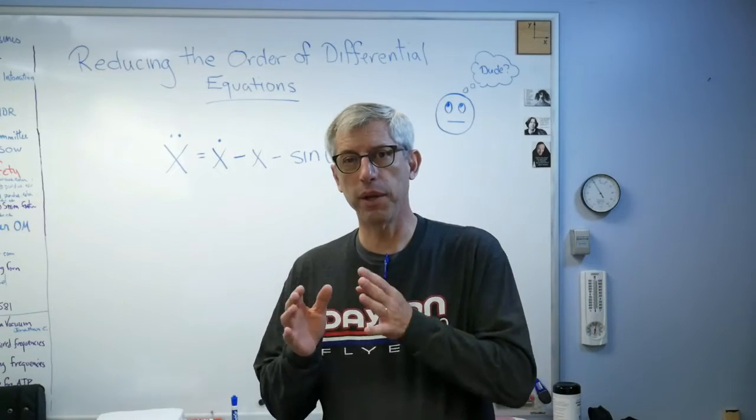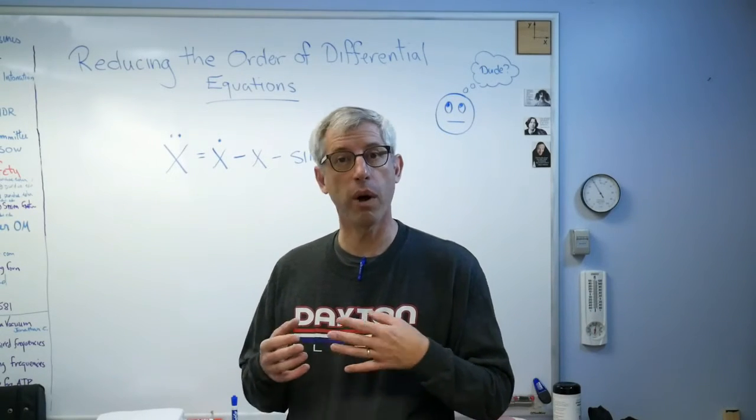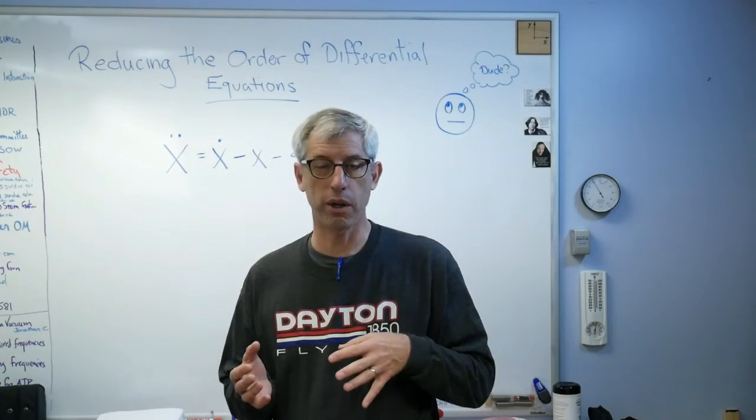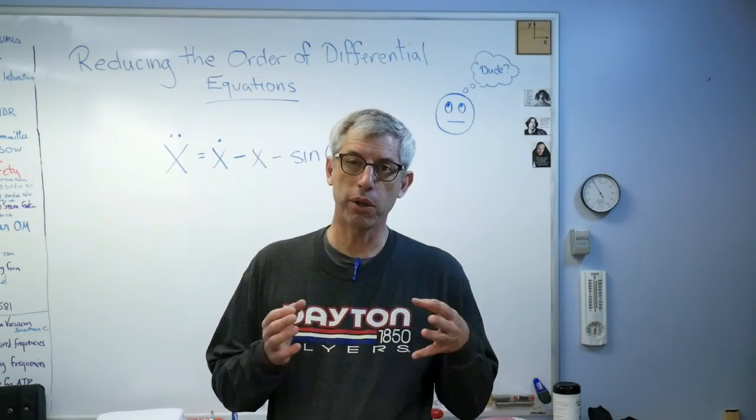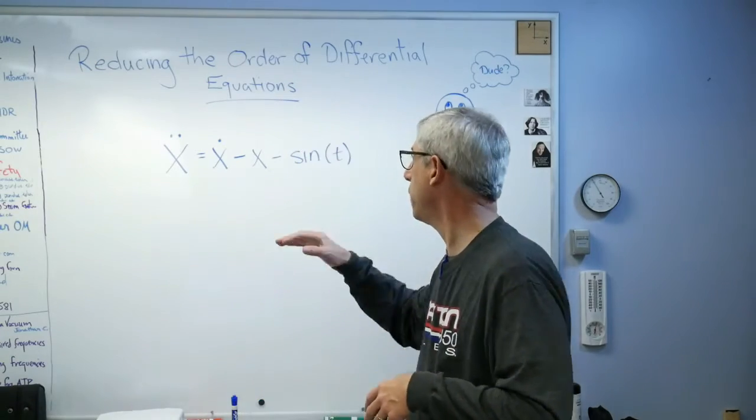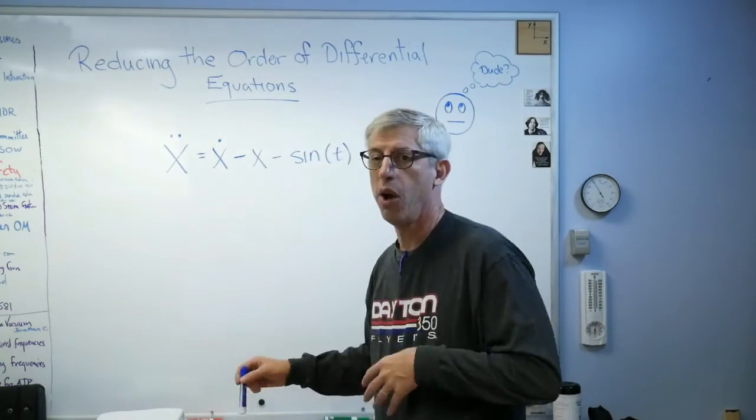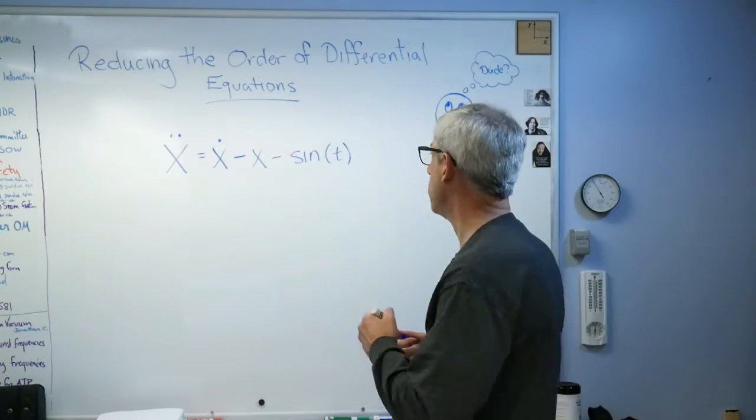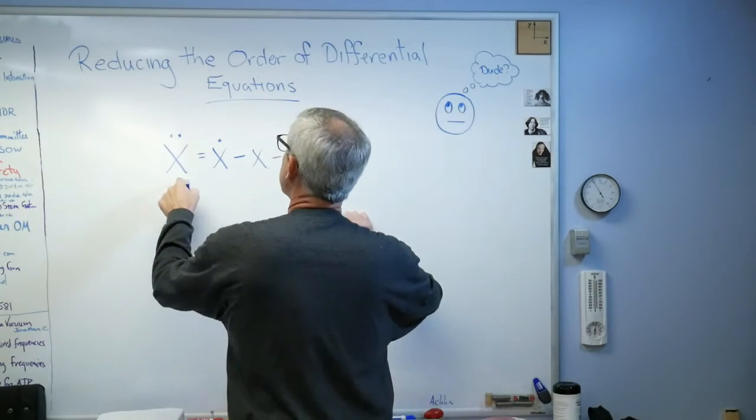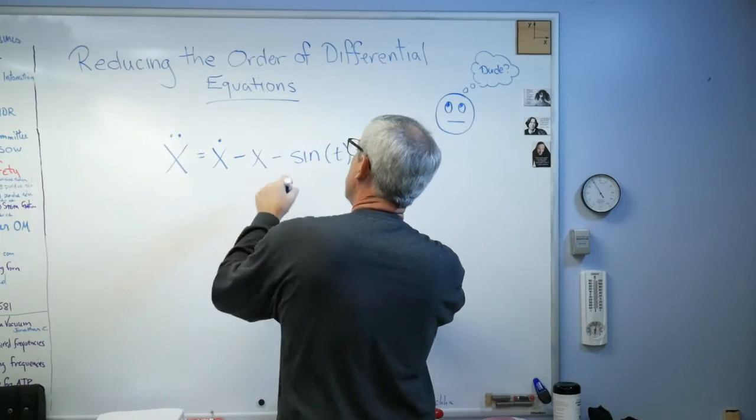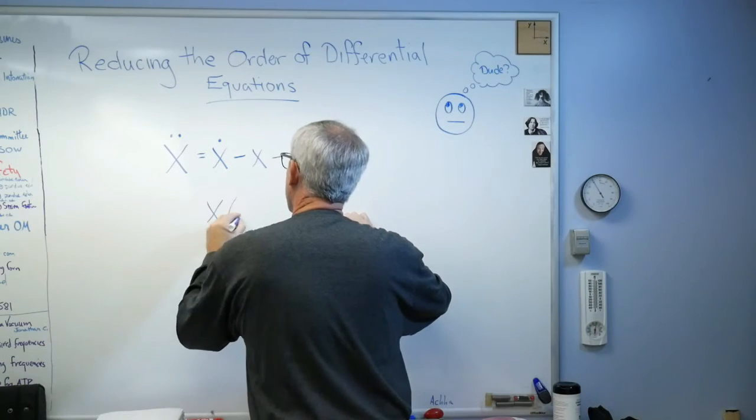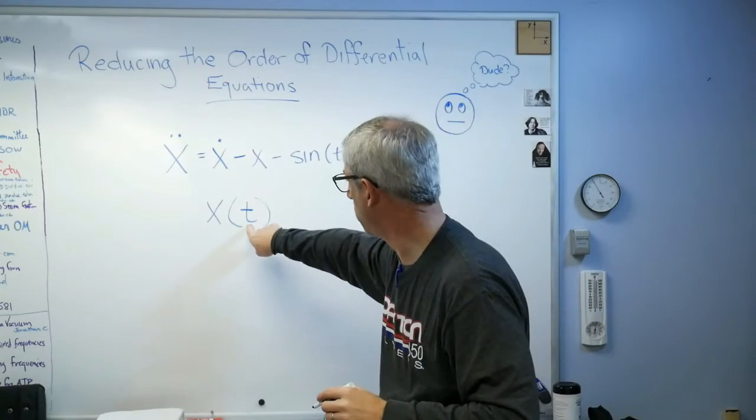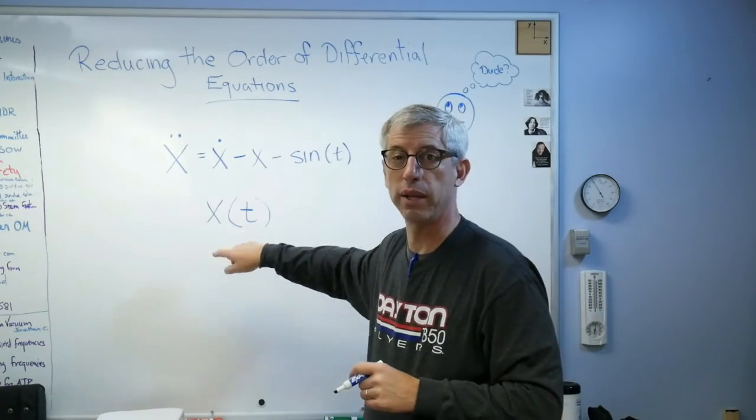Now, there's a couple different descriptors we use for differential equations. One of them is, is the differential equation an ordinary equation or a partial differential equation. Well, I wrote down an ordinary differential equation. Ordinary just means it has one independent variable. So if we're looking at x double dot, x dot, and x and t, what we're really looking at, the function x is actually a function of time. So we want to think of that as the independent variable and that as the dependent variable.